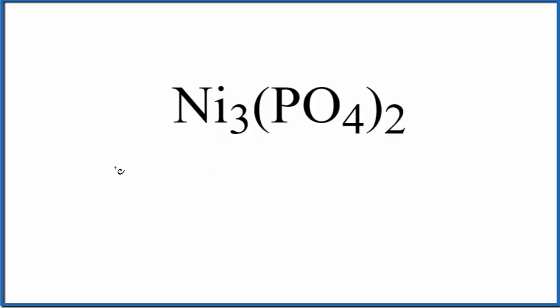So first we write the name for Ni. That's nickel. And then we'll write the name for the polyatomic ion, this phosphate ion here. So you either memorize that PO4 is phosphate, or you look it up on a table of polyatomic ions if you're allowed. So we have our phosphate ion, lowercase p.